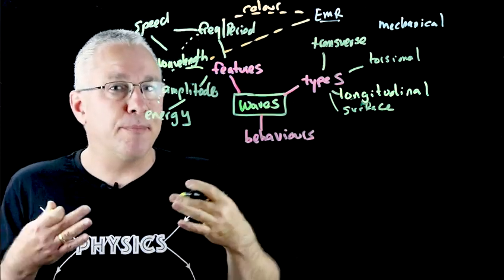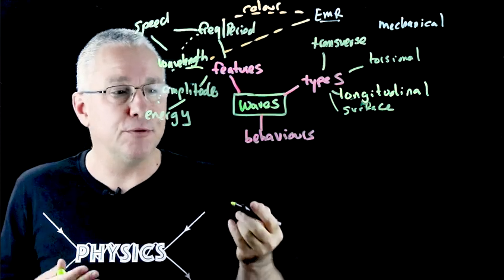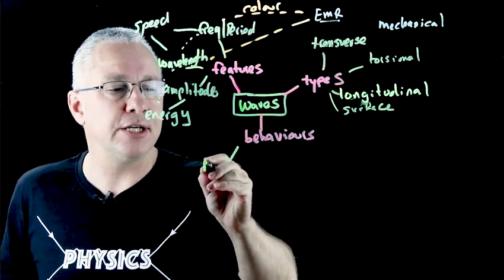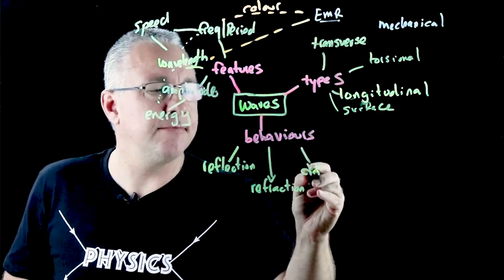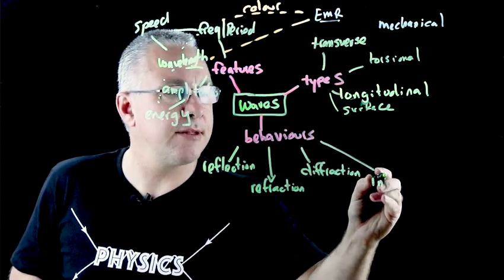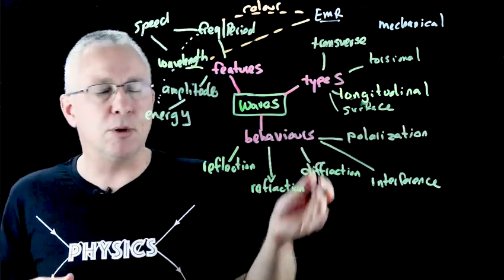I now want to explore the behaviors of the waves that we are dealing with, and we're going to explore five of them. The first is reflection, then there's refraction, we also have diffraction, then we have interference, and lastly we'll look at polarization. Now let's explore those briefly.